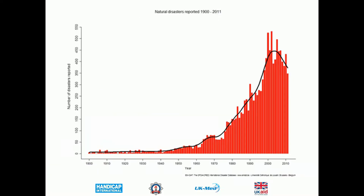Looking at the history of disasters — data from EMDAT — we can see that over time more and more people are being affected by disasters, and the frequency of disasters appears to be increasing. What's actually happening is that we're living in more and more hazardous areas, so we're more prone to disasters. The number of earthquakes is the same; it's just that they're affecting us more. However, overall mortality from disasters is actually coming down.